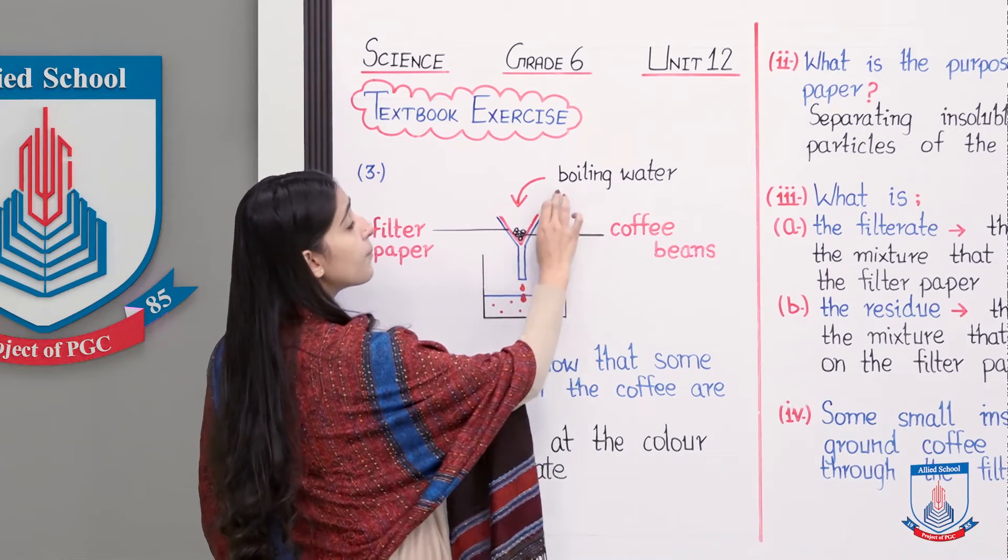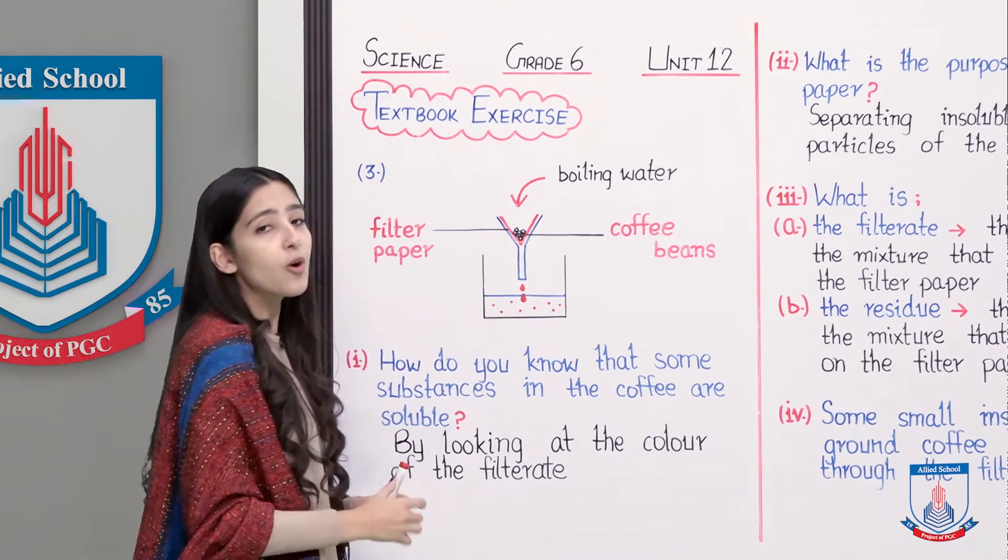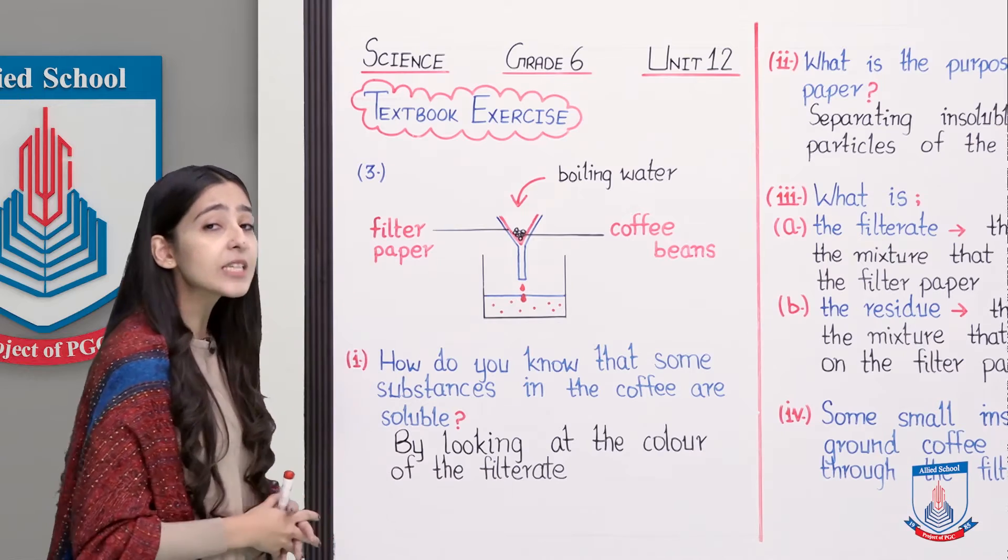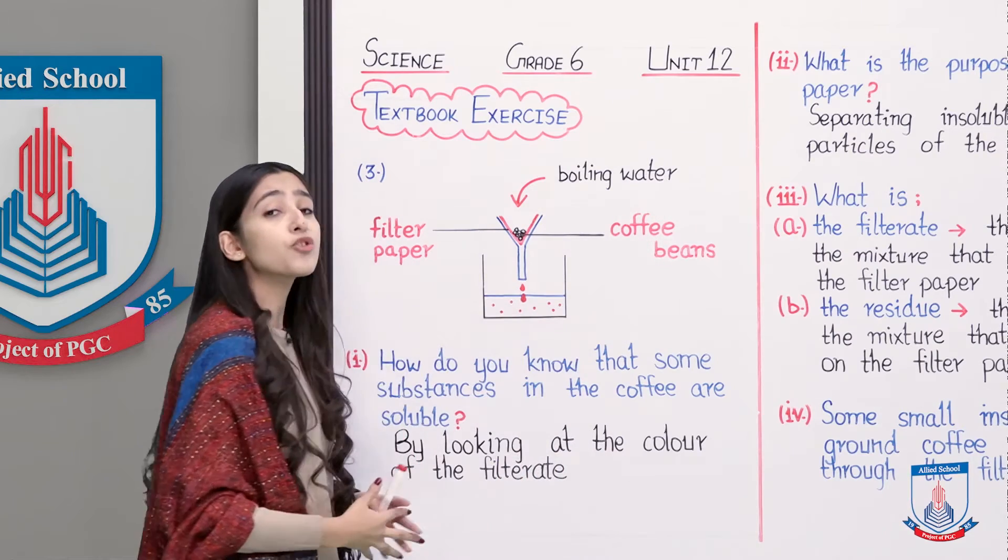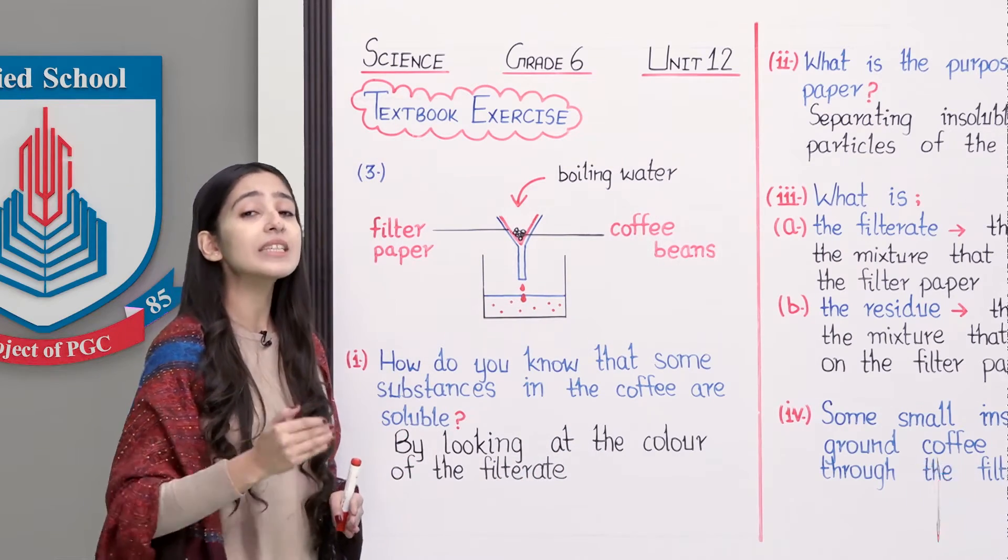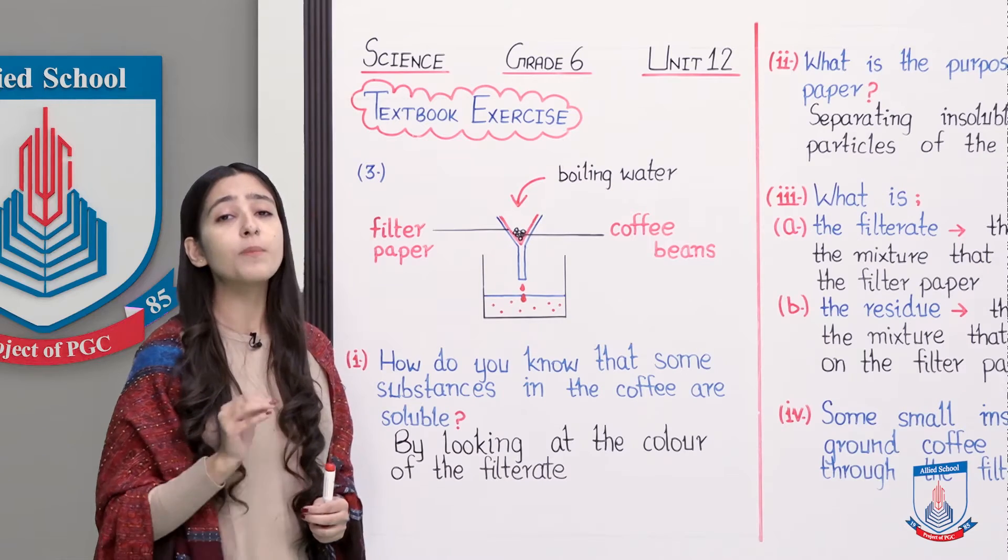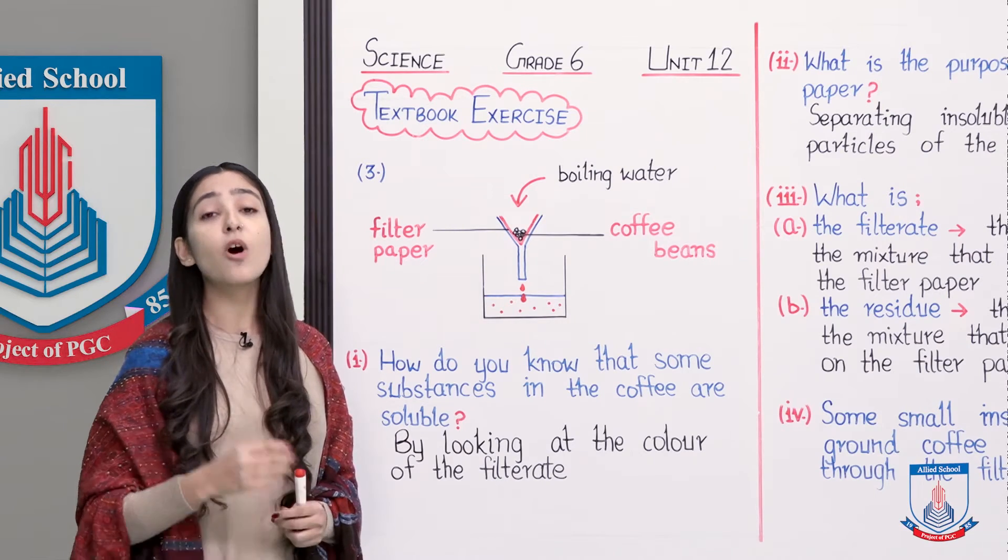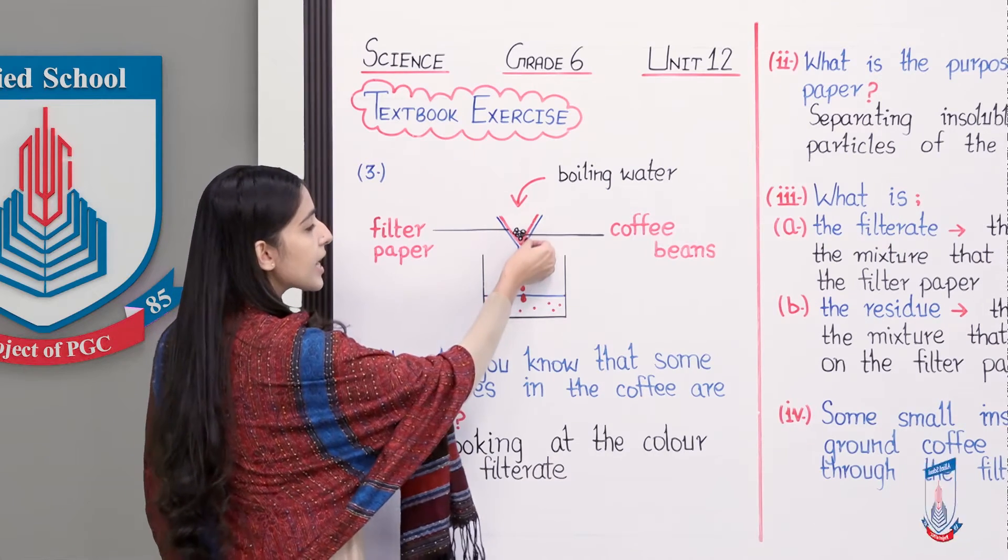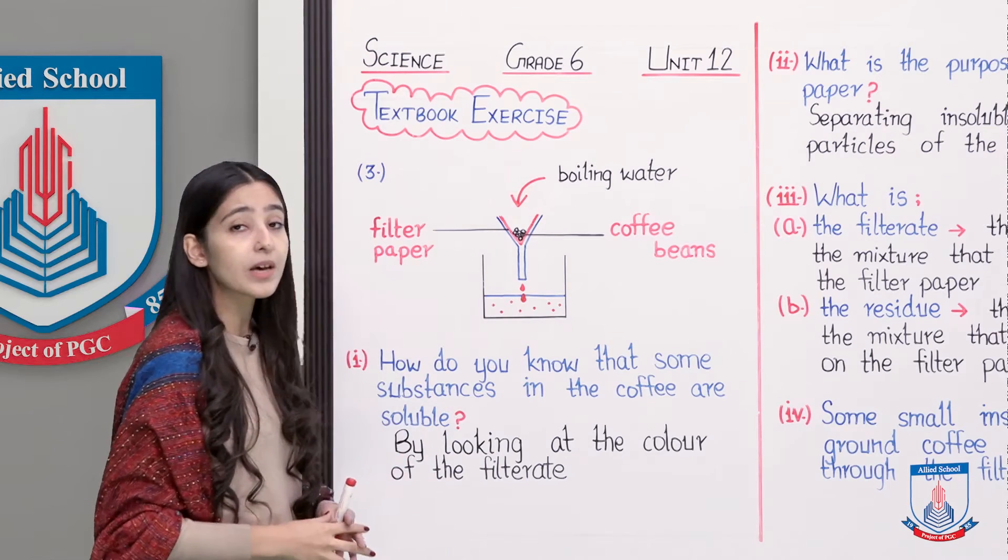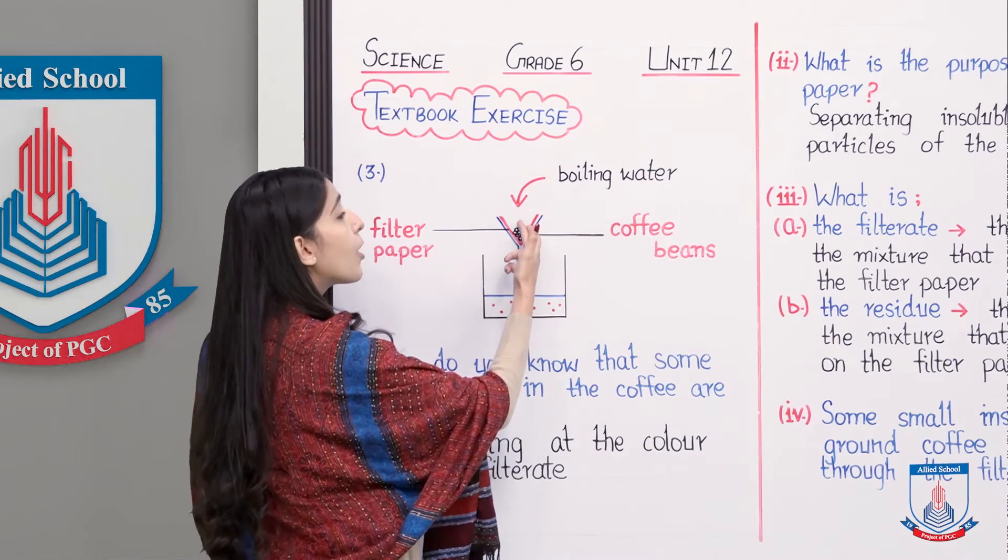These are grounded coffee beans present here, and boiling water is being poured over these coffee beans, which causes a filtrate to pass through and collect below. The filtrate color, as you can see in the textbook exercise, is brown. We are adding boiling water, whose color is transparent.